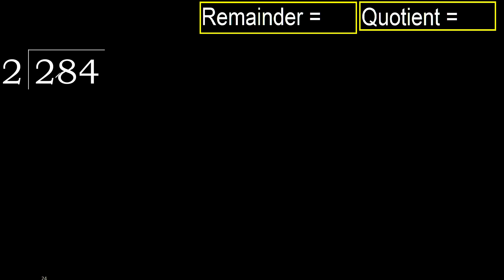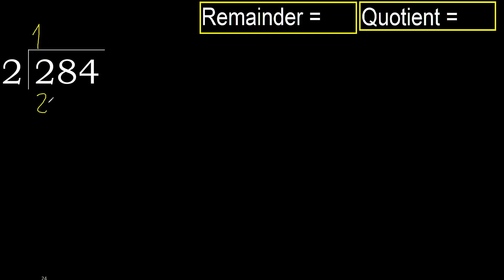284 divided by 2. 2 is not less, therefore: 2 multiplied by which number is nearest but not greater? 2 multiplied by 2 is 4 — that is greater. 2 multiplied by 1 is 2 — not greater. Ok, subtract.